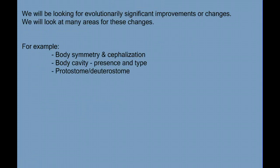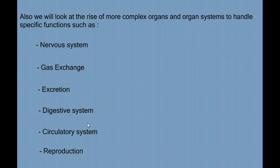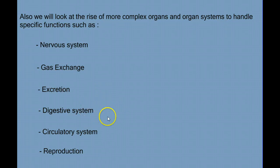As we move through animals from the more simplistic to the more complex, we will be looking for evolutionarily significant changes. We'll be looking for changes in body symmetry, encephalization — having a head — and we will look at the presence and type of body cavities. We will also point out and discuss the major divergence that took place in the more complex animals, and look at comparative anatomy as we explore the rise of complex organ systems such as nervous systems, gas exchange systems, excretion systems, digestive systems, circulatory systems, and reproductive systems.